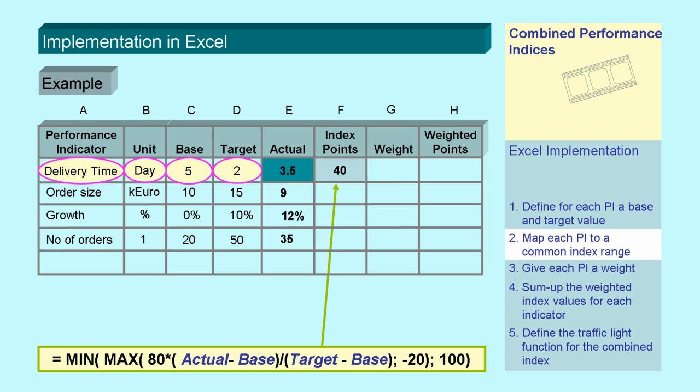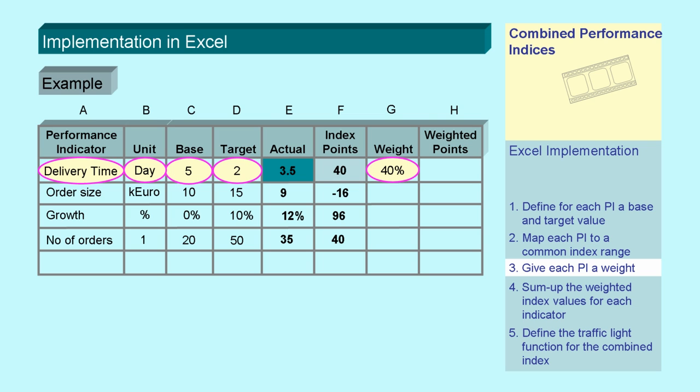The mapping is done with the formula given before, using actual, base, and target values. Weights are given according to the importance of individual performance indicators. They have to sum up to 100%. The weighted points result from the multiplication of index points with weights.